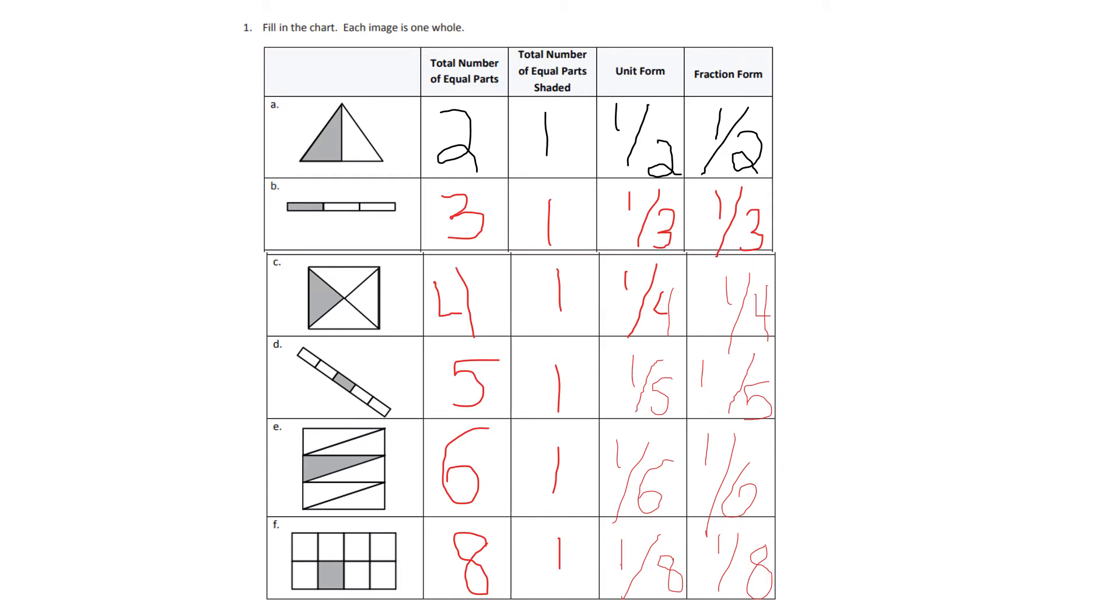So as you can see for B, there are three total number of equal parts. There is, for the total number of equal parts, there's one, the unit form is one-third, the fraction form is one-third. For C, the total number of equal parts is four, the total number of equal parts shaded is one, the unit form is one-fourth.